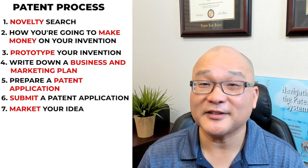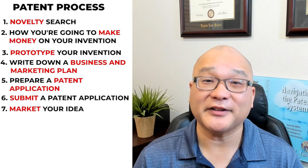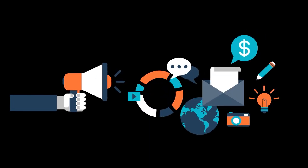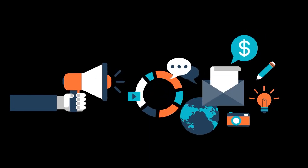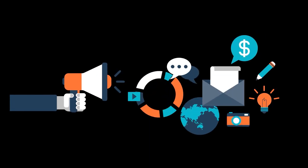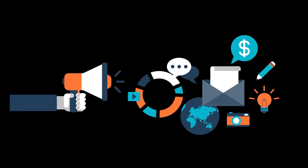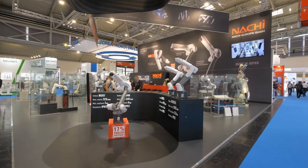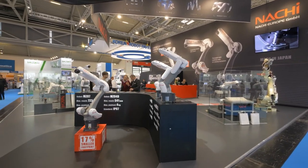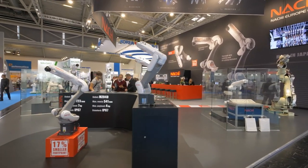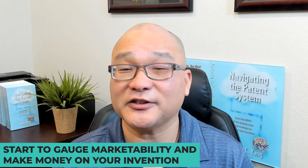Now that you're patent pending, the seventh step is to market your idea. I highly recommend marketing your invention only after getting patent pendency. You need to start your product launch as soon as you file your application so that you can begin to gauge marketability and make money on your invention.